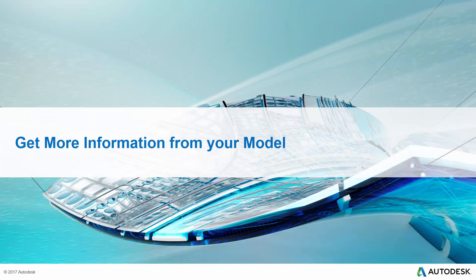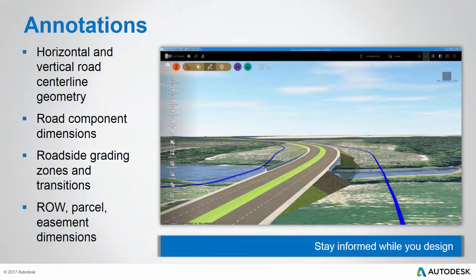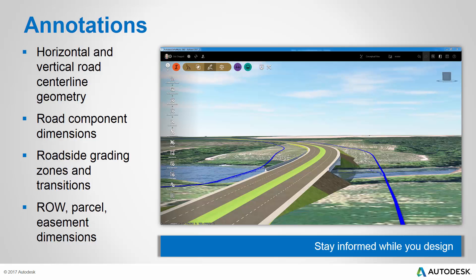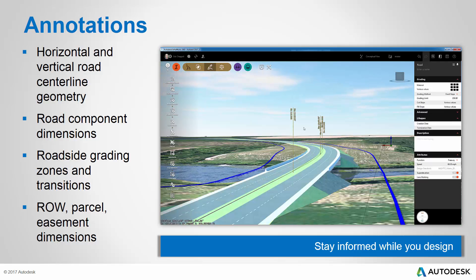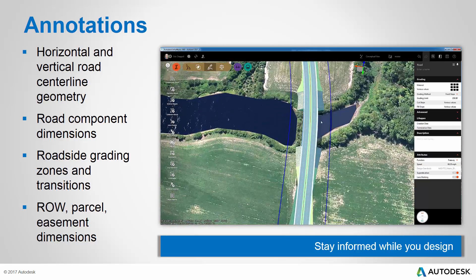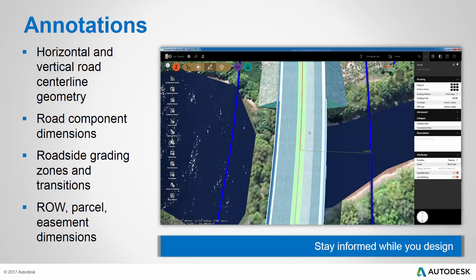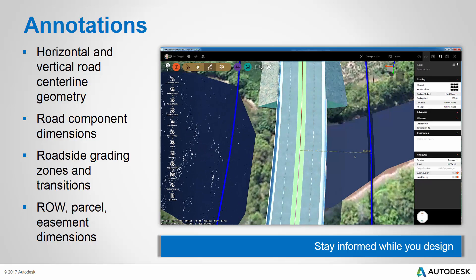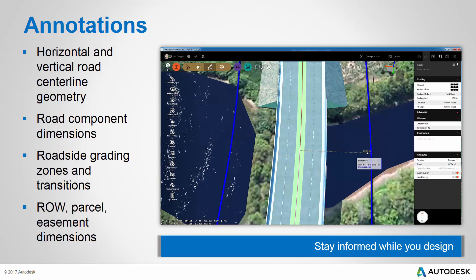Let's talk about how these new features allow you to get more information from your model. Within InfraWorks 360, you can now use annotations to learn important information about your design while you work. For example, if I click this component road, you'll see annotations appear showing key elevations along the road centerline. And if I switch to plan view, you'll see similar information relating to the plan geometry of the centerline — in this case, the station of the beginning of this curve.